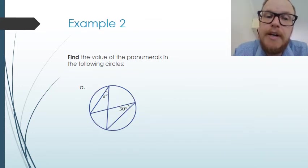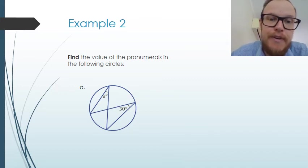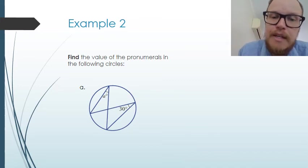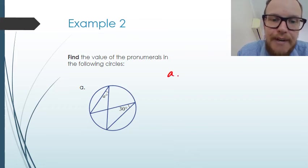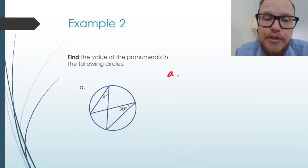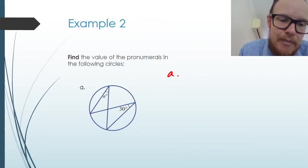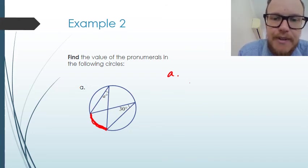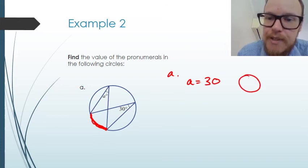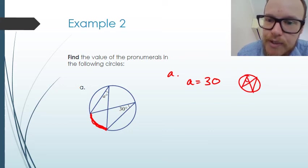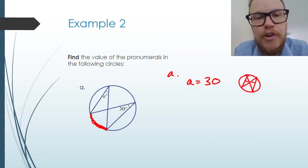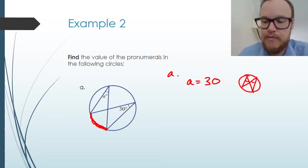Let's look at some examples — finding the values of the pronumerals. In the first circle, we have two angles subtended by the same arc on the edge of the circle, so A equals 30. The coded reason is that these angles are subtended by the same arc — or circle theorem three.